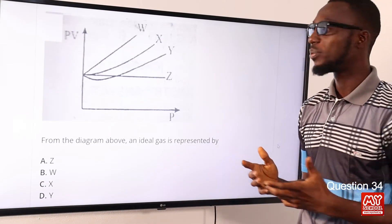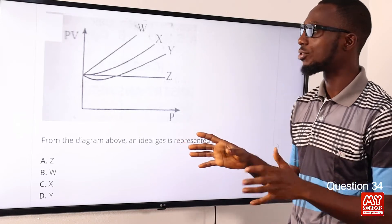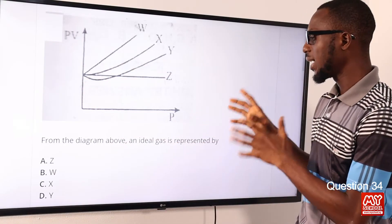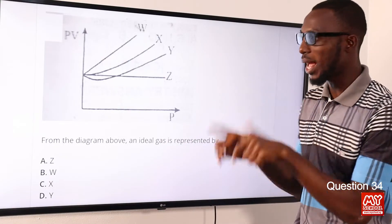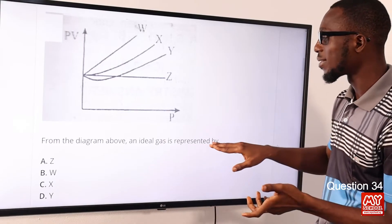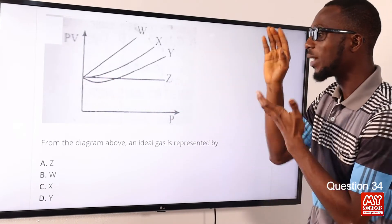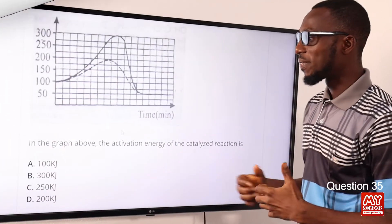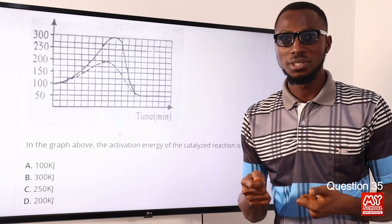Question 34: From the diagram above, an ideal gas is represented by what? Considering this graph, we are looking at Boyle's Law — plotting PV against P. There is a very obvious contrast between an ideal gas and a real gas. The ideal gas is represented by a horizontal straight line Z. The correct option is option A for Z.